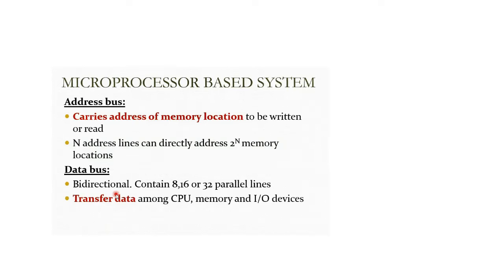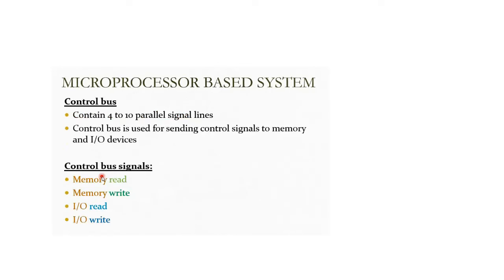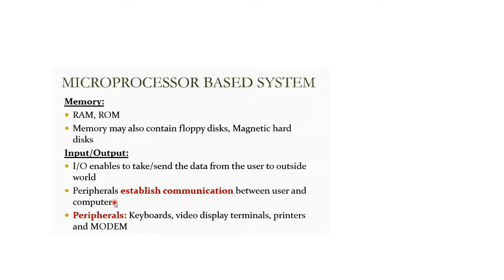The 8086 microprocessor is a 16-bit microprocessor — it has 16-bit memory and can perform both 8-bit and 16-bit manipulations. Data is transferred to and from the microprocessor through the data bus. The control bus carries different signals: a read signal for memory, a write signal for memory, and read/write signals for input/output devices. Input/output devices include keyboards, displays, video, and modems.